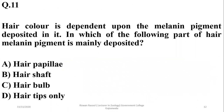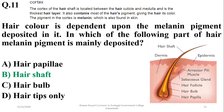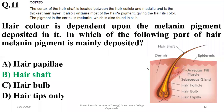Question 11: Hair color is dependent upon melanin pigment. In which part of the hair is melanin mainly deposited? It is abundantly found in the hair shaft. The right option is B. The cortex of the hair shaft is located between the hair cuticle and medulla, and it is the thickest hair layer, containing most of the hair pigment.